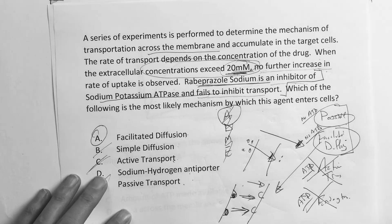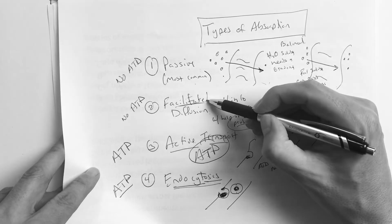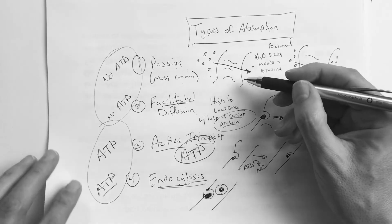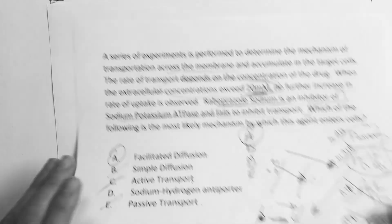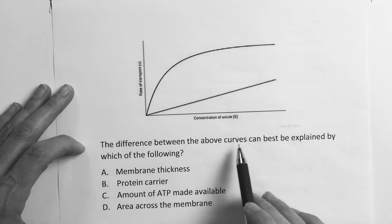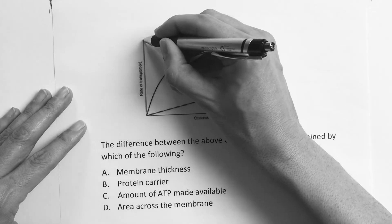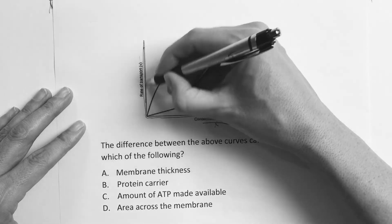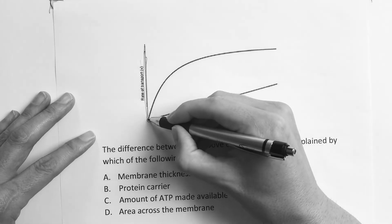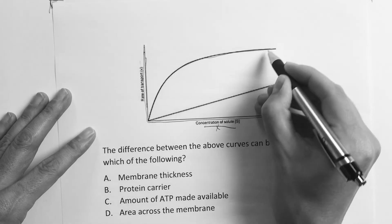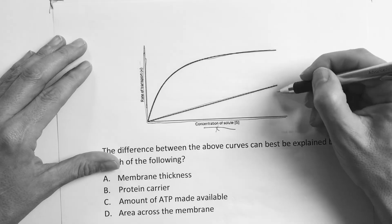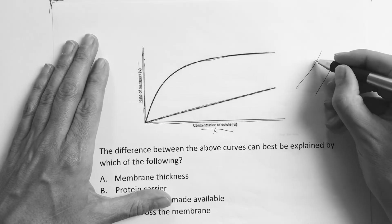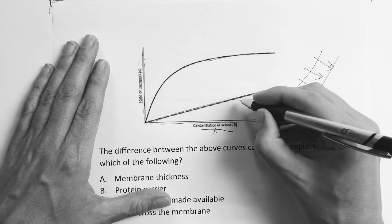The answer is facilitated diffusion — it uses a carrier protein that becomes saturated at a threshold. Simple passive diffusion and facilitated diffusion both lack ATP requirement, but only facilitated diffusion has carrier proteins that can saturate. Active transport uses energy, and endocytosis was a distractor. The next question shows two curves on a graph: concentration of solute on the x-axis and rate of transport on the y-axis — one line levels off, one keeps going linearly.